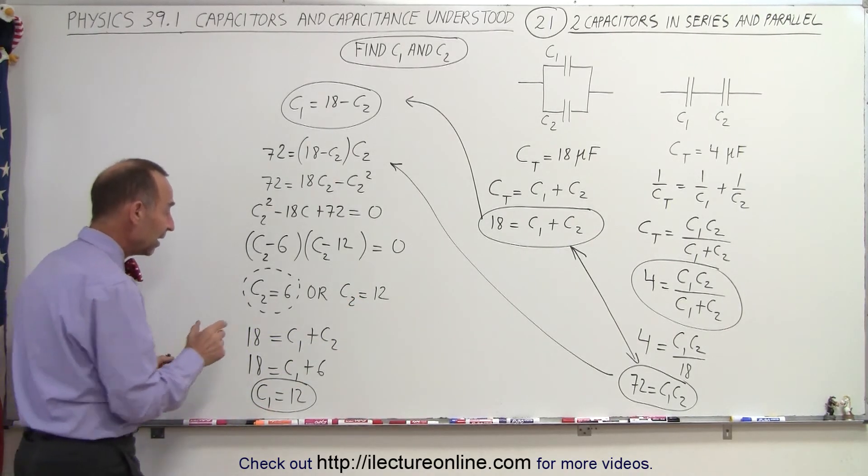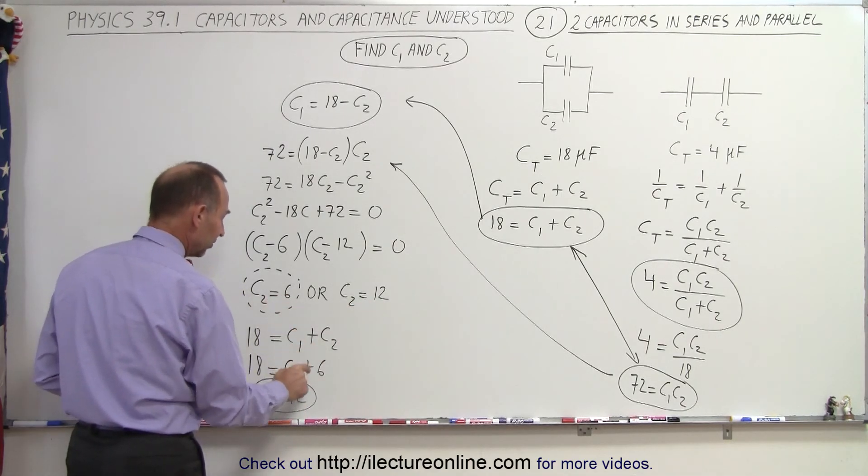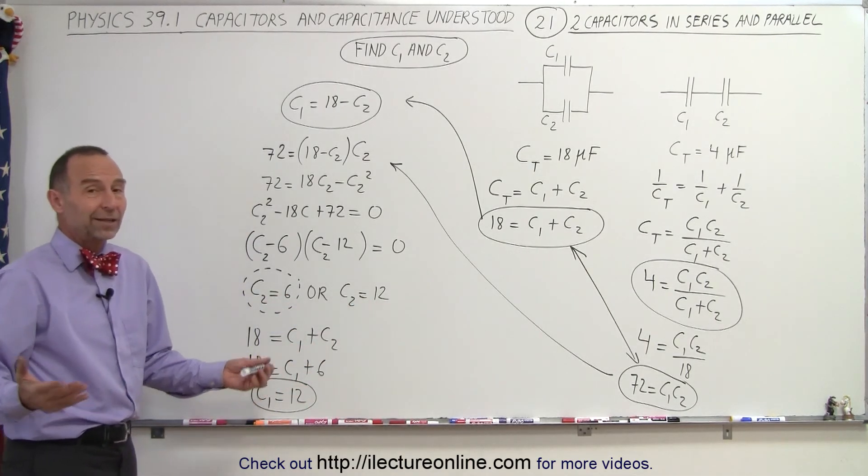And that would be the other solution that C2 could be. So there's the answer. If we let C2 equals 12, C1 will be six. If we let C2 be six, C1 will be 12. So either way, it doesn't matter.